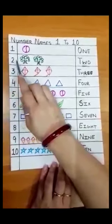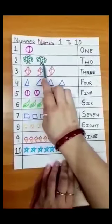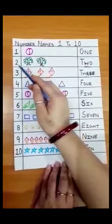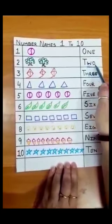Then two. This is two. Two trees. Two is numeral and the number name is T-W-O, two.